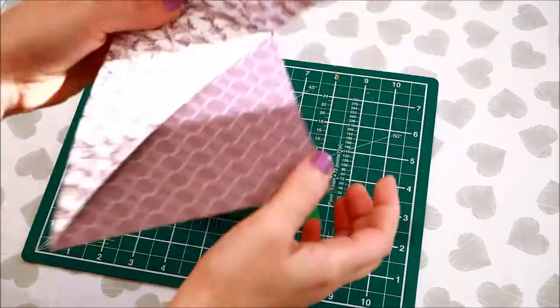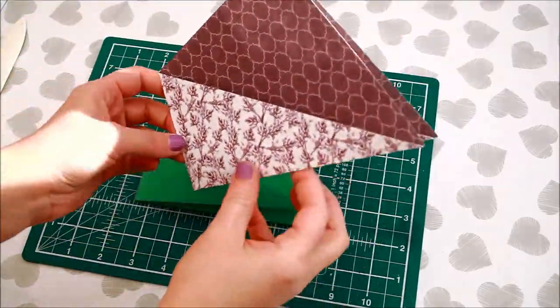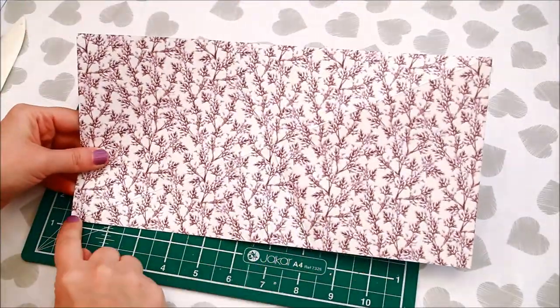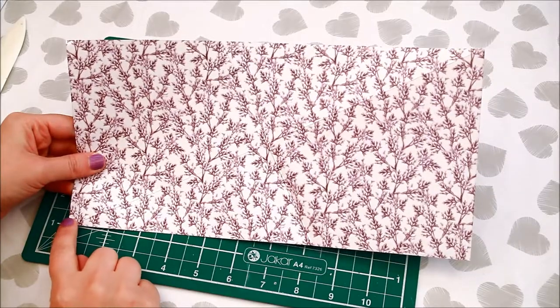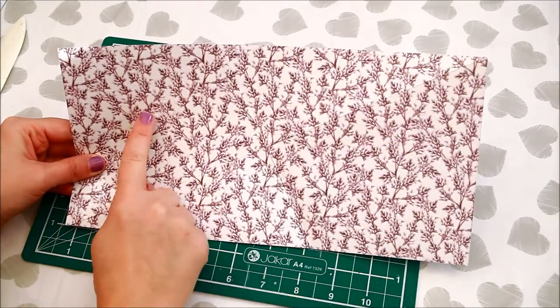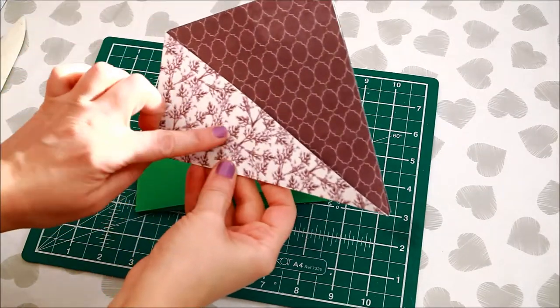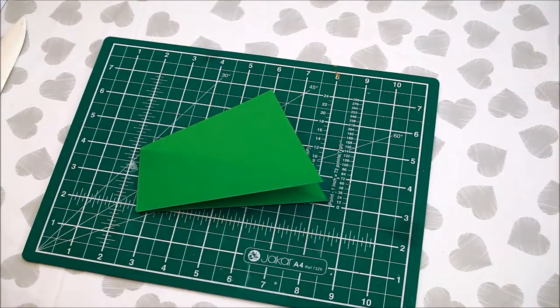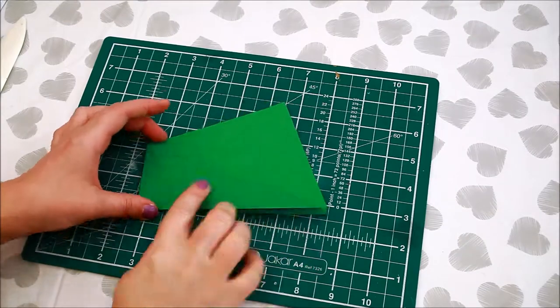If you decide on using a double sided pattern paper like this one, make sure you score from the bottom left corner towards the top right corner. And the side you want it to show on the front of your card. Let's get back to our card.